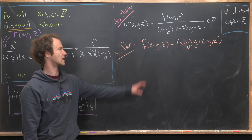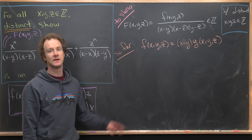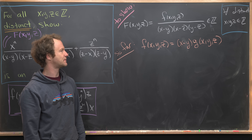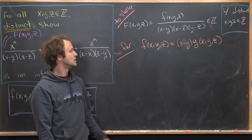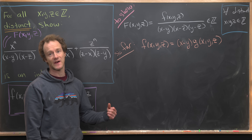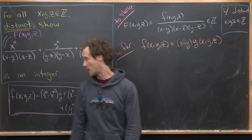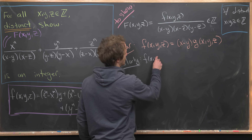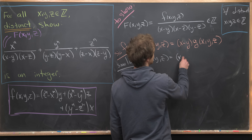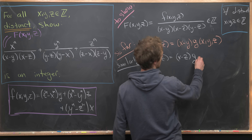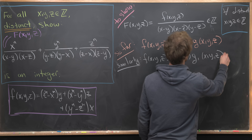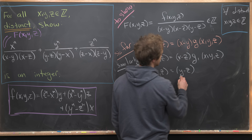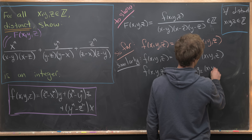There was nothing special about (x minus y) in this argument — the same reasoning applies to factor out (x minus z) and (y minus z) from f(x, y, z). So we also have f(x, y, z) equals (x minus z) times g₁(x, y, z), and f(x, y, z) equals (y minus z) times g₂(x, y, z).